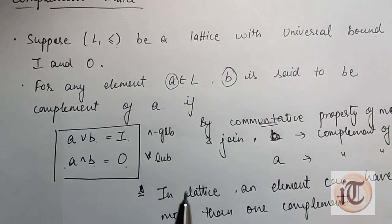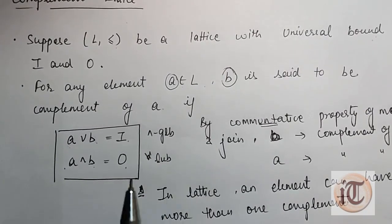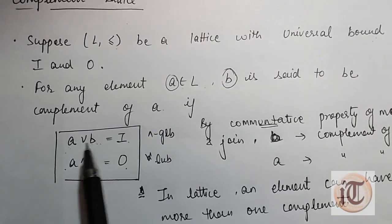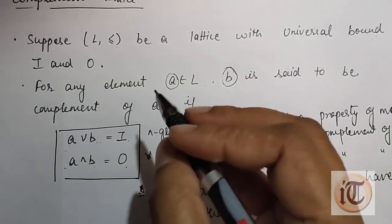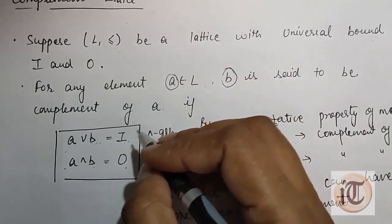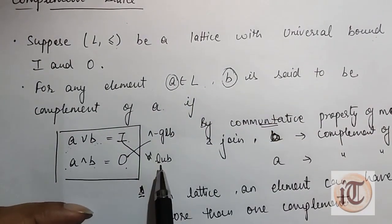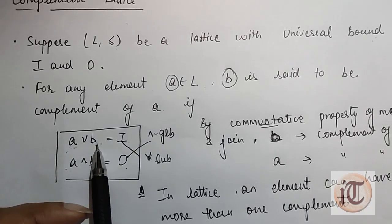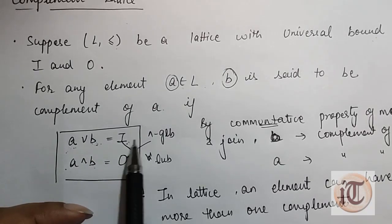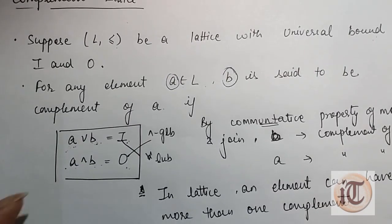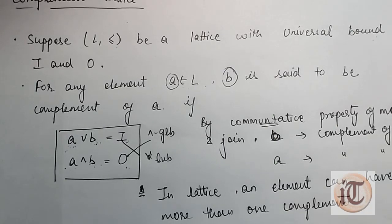To find the complement of a given element: the least upper bound of a and b must equal i, and the greatest lower bound of a and b must equal o. If both conditions are satisfied, then b is said to be a complement of a. Let's take some examples.